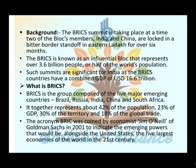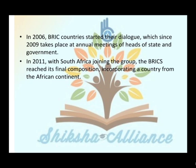BRICS is the group composed of 5 major emerging countries: Brazil, Russia, India, China and South Africa. Together they represent 42% of the world's population, 23% of GDP, 30% of territory, and 13% of global trade. The acronym BRICS was coined by economist Jim O'Neill of Goldman Sachs in 2001 to indicate emerging powers that were set to be among the 5 largest economies in the 21st century. BRICS countries started their dialogue in 2006, and annual meetings of heads of state began in 2009. South Africa joined in 2011, completing the final BRICS composition.